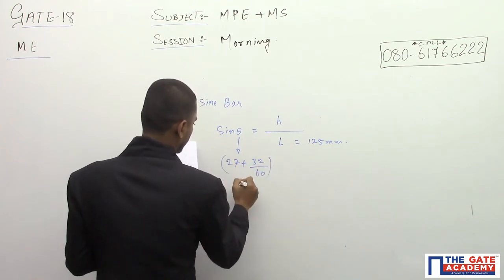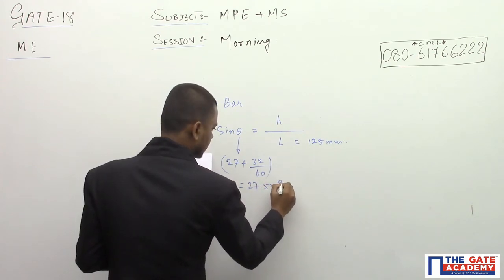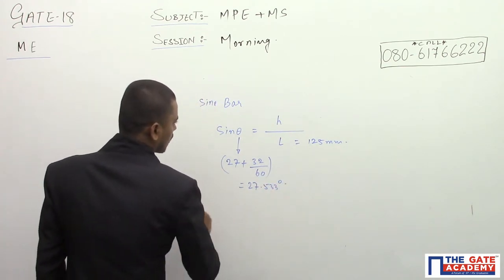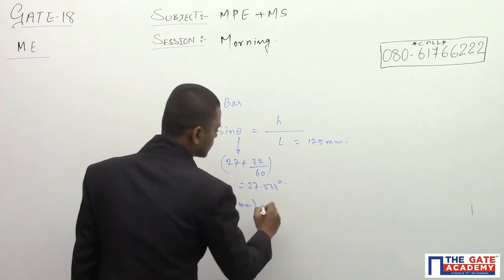Your height H in mm will be equal to 125 multiply by sine 27.533 degree.